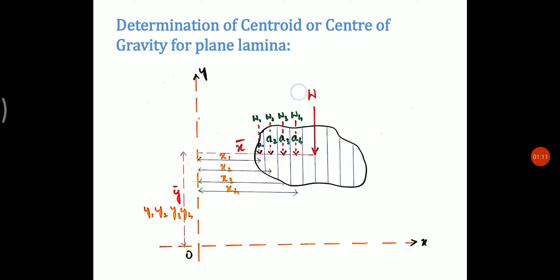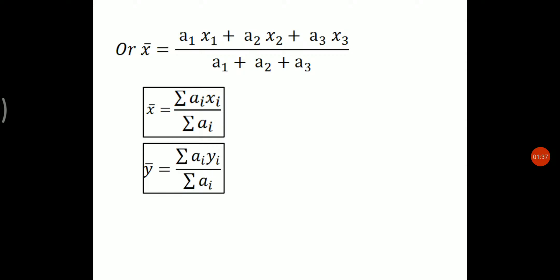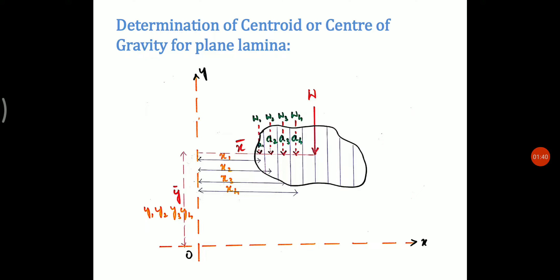Let w be the total weight of the plane acting at point G at a distance of x-bar and y-bar from the y-axis and x-axis respectively. Divide this plane into a number of elemental areas as shown in this figure. Let w1, w2, w3, etc. be the weights of elemental strips acting at coordinates x1, y1 and x2, y2 and x3, y3, and so on.